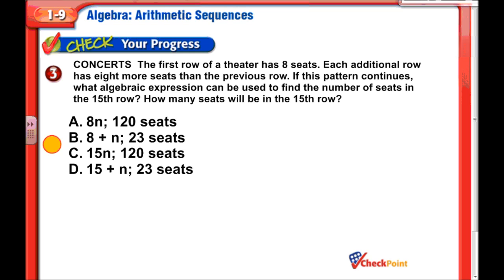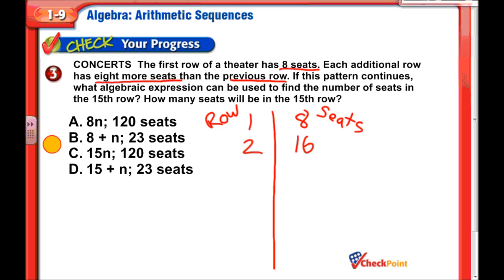Now one for us to do together: the first row of a theater has 8 seats, and each additional row has 8 more seats than the previous row. What expression gives the number of seats in the 15th row, and how many seats is that? Let's jot down the pattern: row 1 has 8 seats, row 2 has 8 more than 8, so 16. This is our row number versus number of seats table. Row 3 would have 8 more than 16, which is 24.